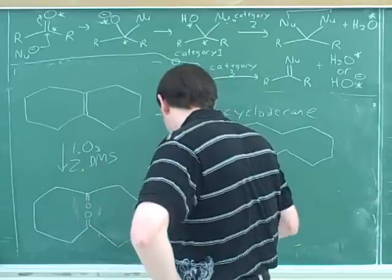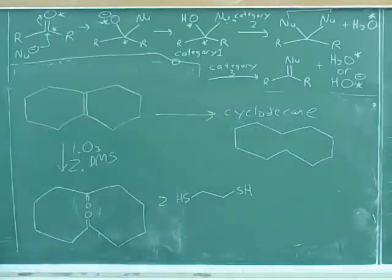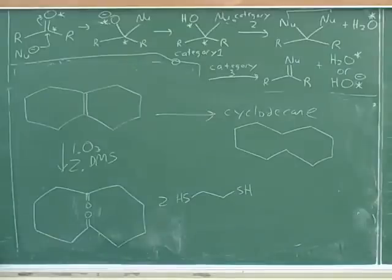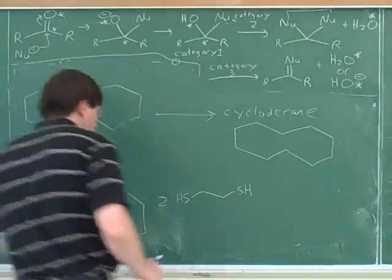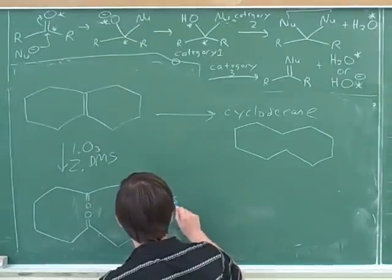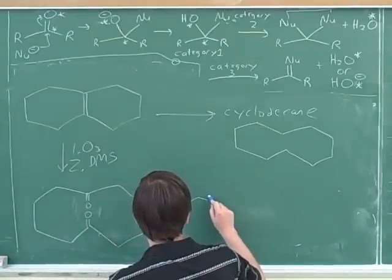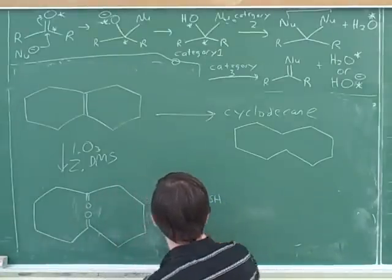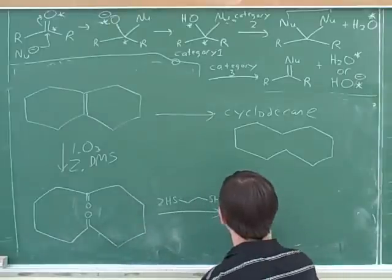We would have like two. Yeah, we won't worry about the mechanism. But we should draw the intermediate. About two. And then again, would we have to add two equivalents of Raney nickel?